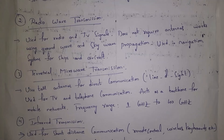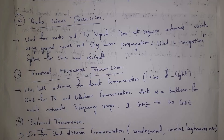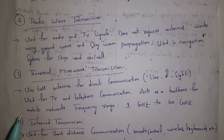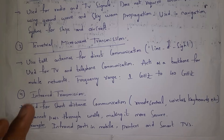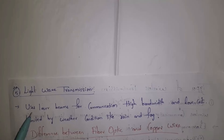Radio waves are used for radio and television signals. They work using ground wave propagation and sky wave propagation and are used in navigation systems. Terrestrial microwave transmission uses tall antennas for direct communication with signals transmitted in a line — used for TV and telephone communications, and acting as a backbone for mobile networks with a frequency range of 1 GHz to 40 GHz. Infrared transmission is used for short distance communication like wireless keyboards and TV remotes and is more secure because it cannot pass through walls. Light wave transmission uses laser beams for communication with high bandwidth and low cost, but it depends on weather conditions — rain or fog can affect its performance.